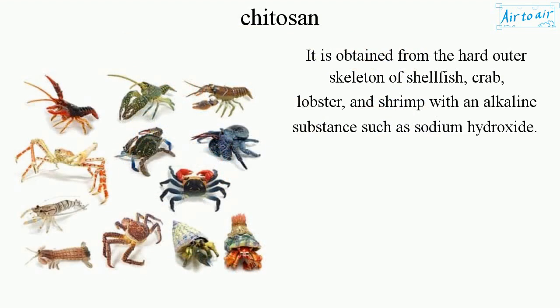It is obtained from the hard outer skeleton of shellfish — crab, lobster, and shrimp — with an alkaline substance such as sodium hydroxide.